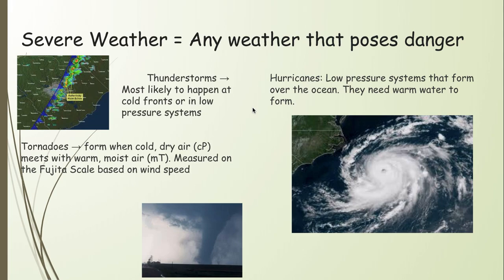Hurricanes are low pressure systems that form over the ocean. They start as disturbances — just a loose collection of storms — and they gather strength over warm water, which is the fuel that drives the engine. They are pushed by easterly winds toward the North American continent when in the Atlantic Ocean. The lower the air pressure, the greater the wind speed. The greater the wind speed, the higher the category. Hurricanes are measured on the Saffir-Simpson scale, which is based on air pressure and wind speed.